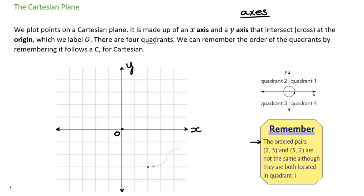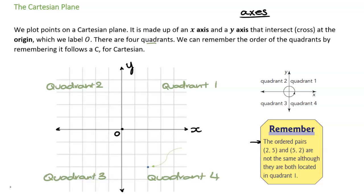To remember which way the quadrants go, here's a trick: I remember I'm on a Cartesian plane and I draw a C. So quadrant one, quadrant two, quadrant three, and quadrant four — that's how I remember.